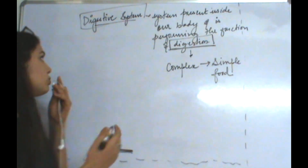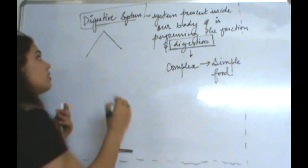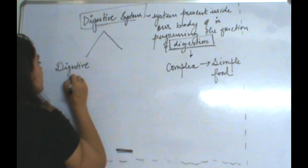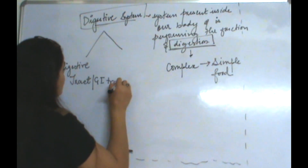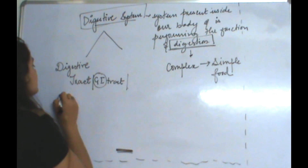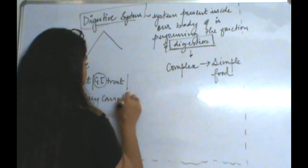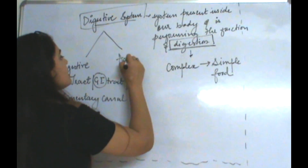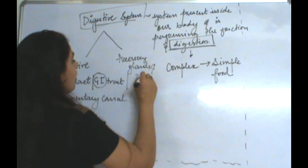The digestive system is mainly divided into two parts. The first part is the digestive tract, also known as the GI tract — GI meaning gastrointestinal tract — and also known as the alimentary canal. The second part is the accessory glands and organs.